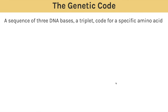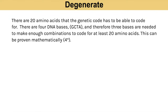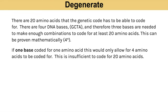The genetic code has a few key features. A sequence of three bases on DNA is called a triplet, and those three bases will code for a particular amino acid. The three features are: it is a degenerate code, it's universal, and it's non-overlapping. There are 20 amino acids and four possible DNA bases. They worked out mathematically that it was three DNA bases coding for one amino acid — one base would only give four possible codes, which is not enough to code for 20 different amino acids.